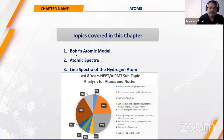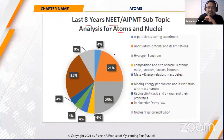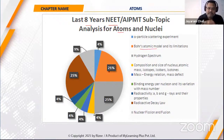The important topics in this chapter are the Bohr's model of the atomic model, atomic spectrum, and the line spectrum of the hydrogen atom. Analyzing the previous eight years of NEET examinations, the Bohr's model has appeared 21% of the time.